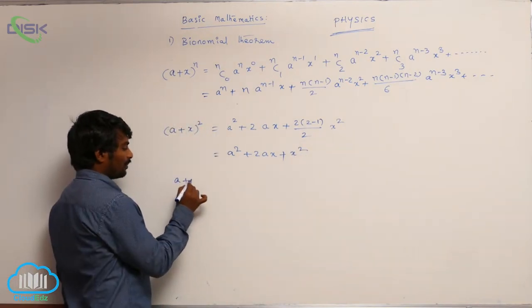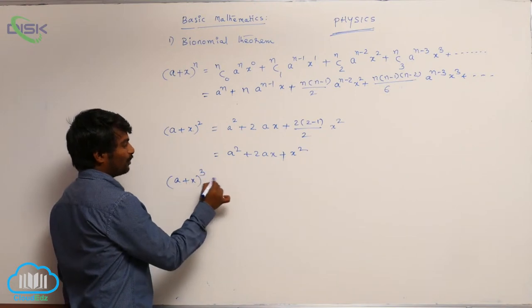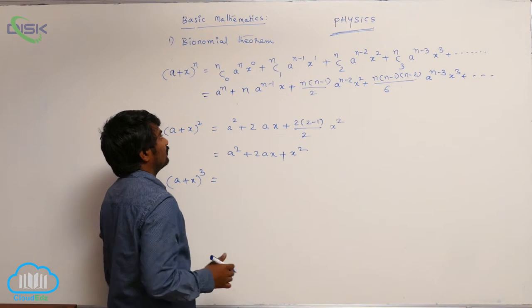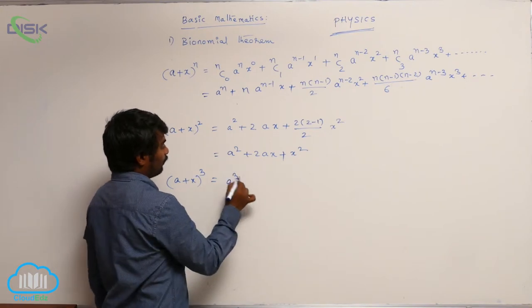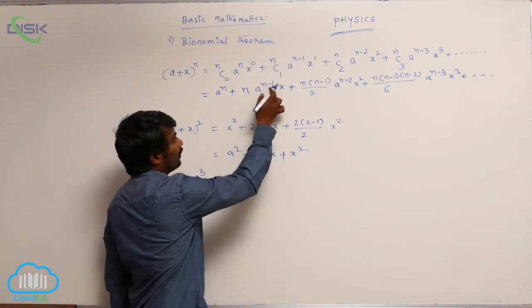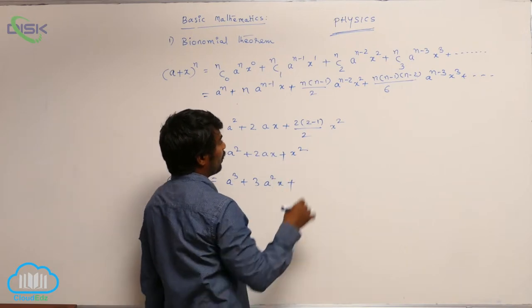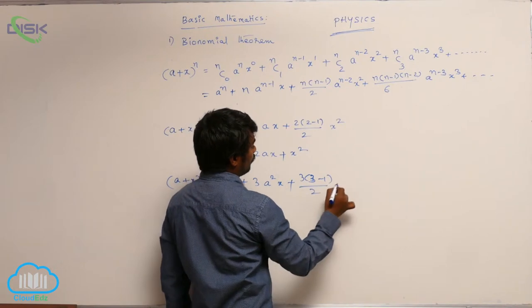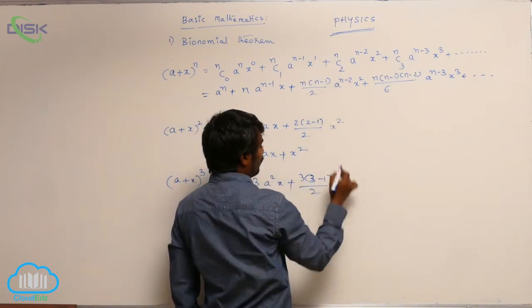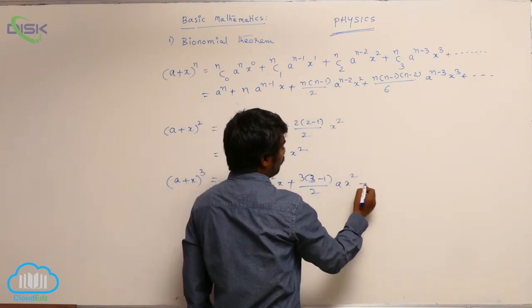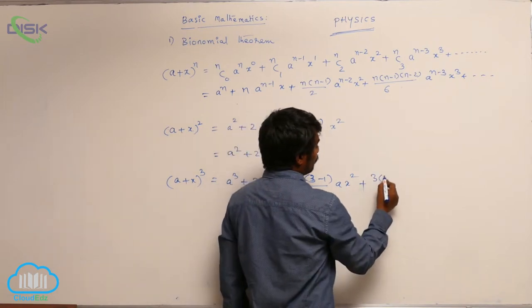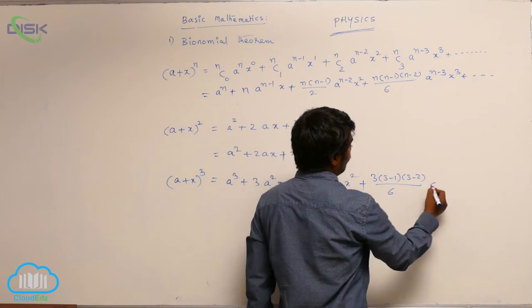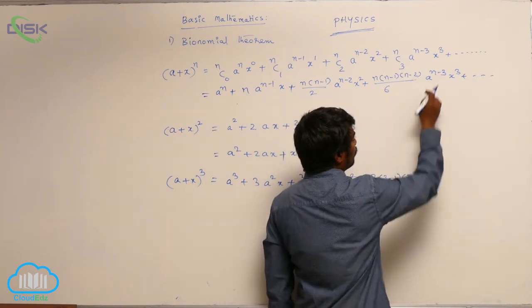And let me go for (a+x)^3. Wherever n is present, you just write down 3. So a^3 + 3a^2x + [3(3-1)]/2 times a^1 times x^2 + [3(3-1)(3-2)]/6 times a^(3-3)... a^(3-3) is a^0.